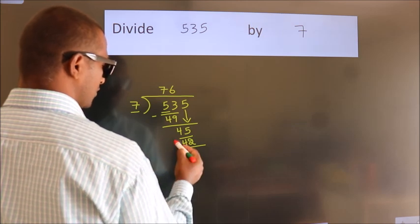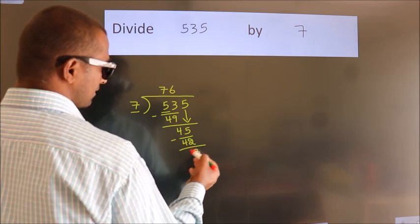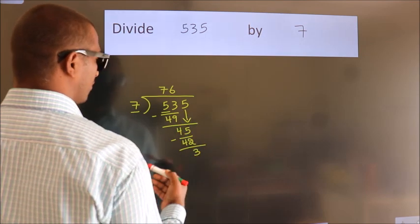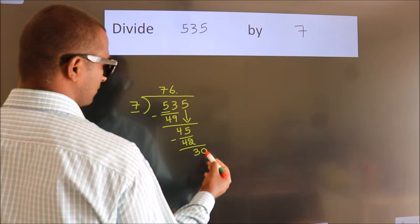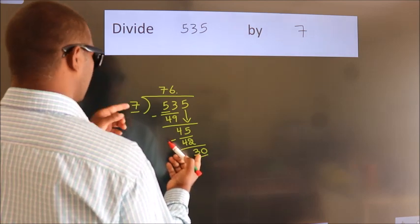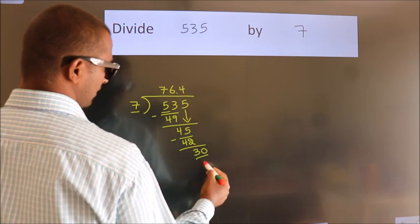Now we should subtract. We get 3. After this no more numbers to bring it down. So what we do is we put dot, take 0, so 30. A number close to 30 in the 7 table is 7 times 4 is 28.